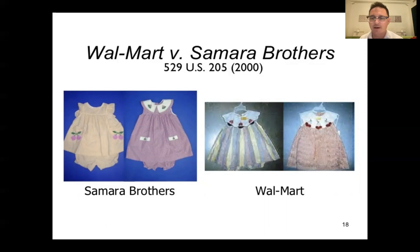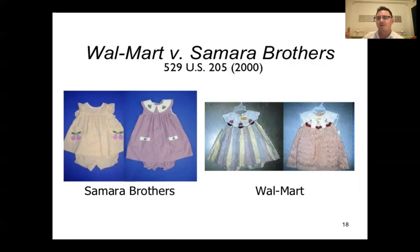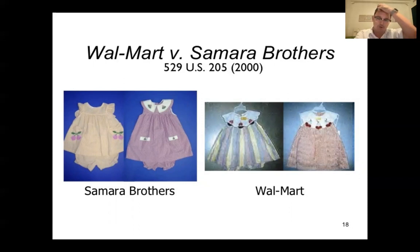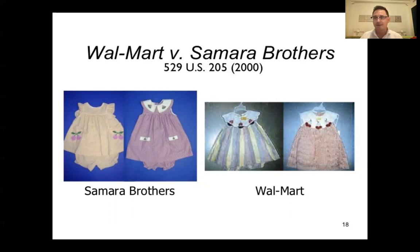Samara Brothers were in the business of making semi-high-end clothing for children with a bunch of different customers. Walmart thought their products were overpriced and took some Samara Brothers products to a manufacturer in China, asking them to make copies. The manufacturer produced something relatively similar. When Samara Brothers tried to sell to their other customers, those customers said Walmart has the same thing for cheaper. Samara Brothers brought an action against Walmart, and the court ultimately held that the products were not inherently distinctive.